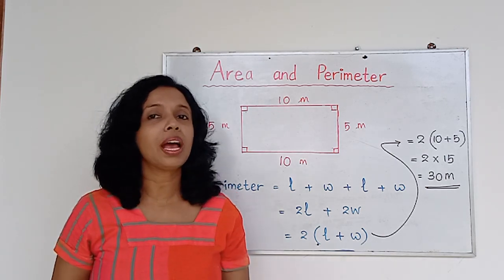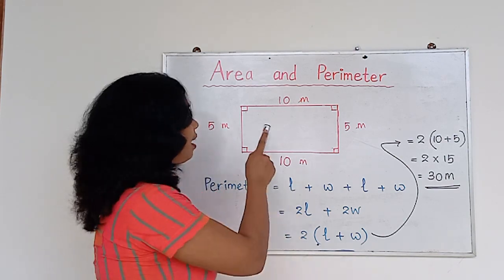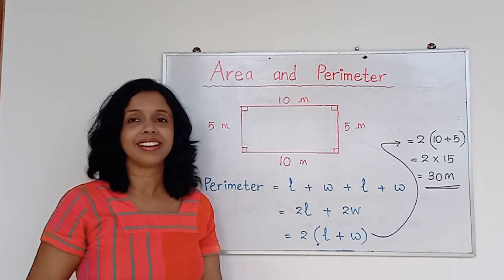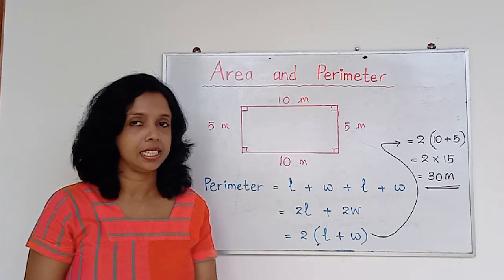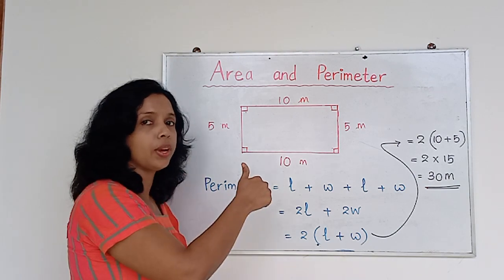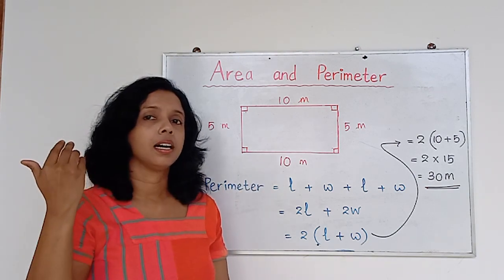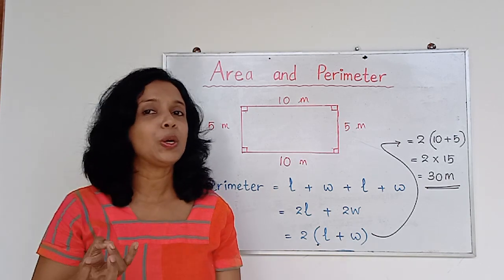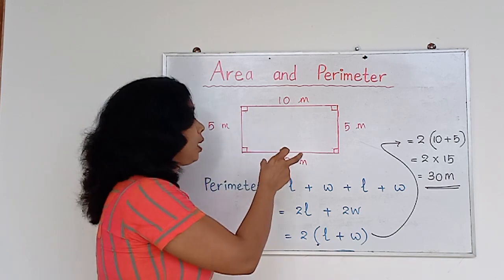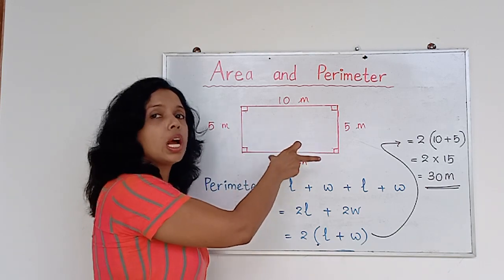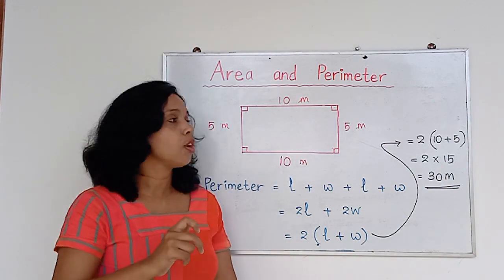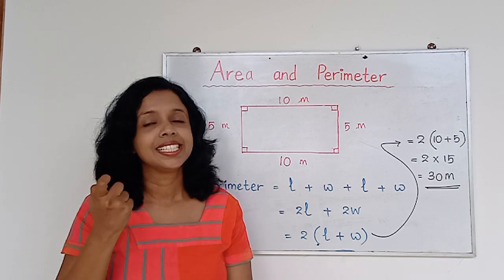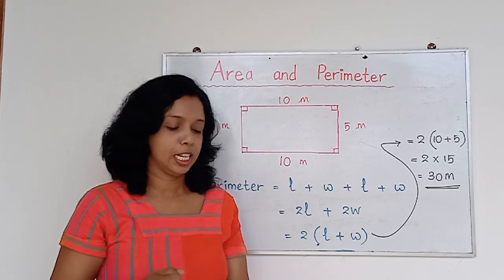Hope everybody understood how to calculate the area and perimeter of a rectangle. The units of area can be millimeter squared, centimeter squared, meter squared, or kilometer squared — it depends on the units you had for your length and width. And for perimeter, the unit can be either millimeters, centimeters, meters, or kilometers.